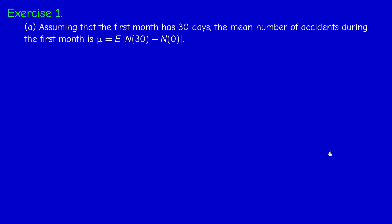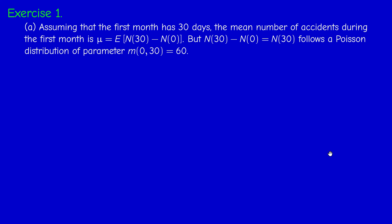For the first question, we compute the expected number of accidents during the first month. If the first month contains 30 days, the number of accidents is N(30) minus N(0), which is just N(30). This follows a Poisson distribution with parameter M(0,30) = 2×30 = 60. So the average number of accidents is 60. If the first month contains 31 days, the mean would be 62 accidents.